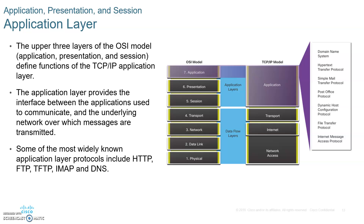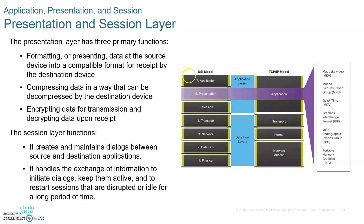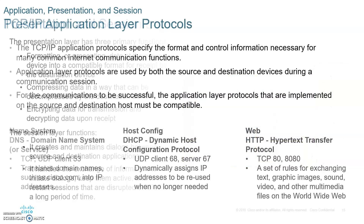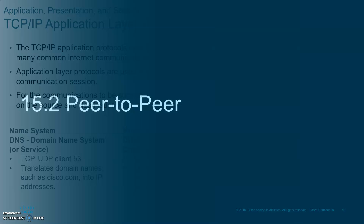The application layer of the OSI model is first responsible for user interface and application. The presentation layer is responsible for formatting, encrypting, or compressing data. And the session layer is the one that's responsible for creating and maintaining a dialogue between the sender and the receiver.